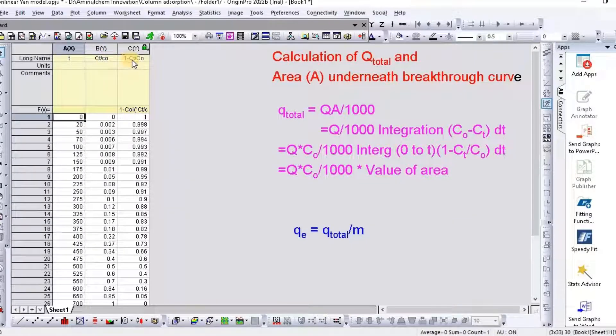So that 1 minus Ct by C0 equal to 1. Then go to curve.